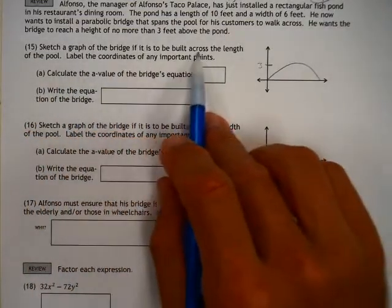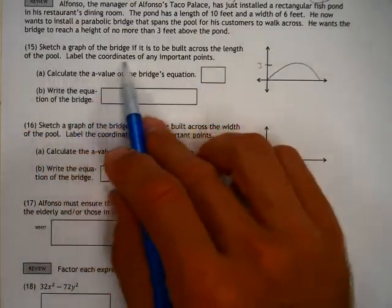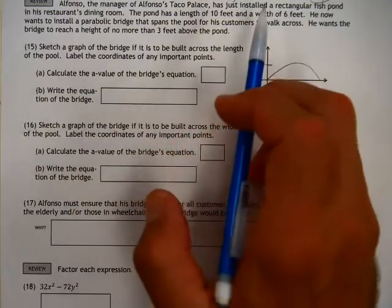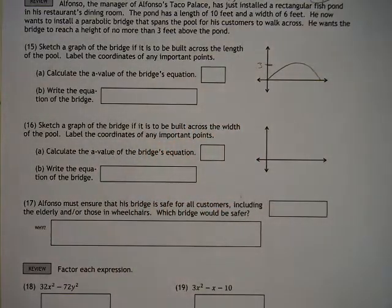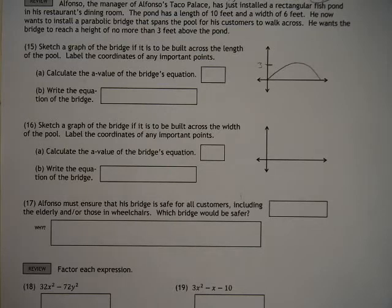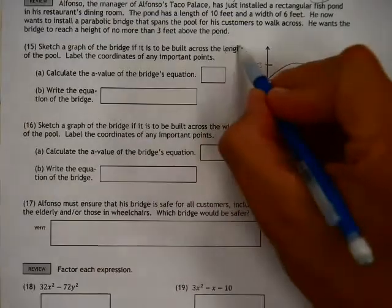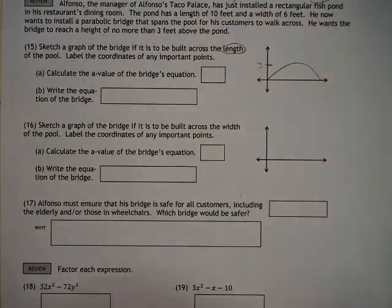Sketch graph the bridge if it is to be built across the length of the pool. Label the coordinates of important points and calculate the A value. Okay. The pond has a length of 10 feet and a width of 6 feet. And he wants to install a parabolic bridge that spans the pool for his customers to walk across. It's to be built across the length of the pool. See, that's what reading is all about, my people.